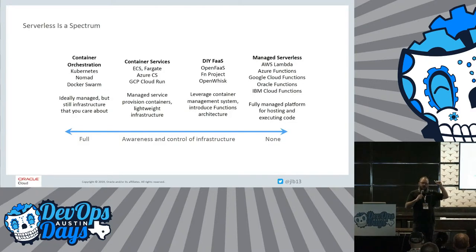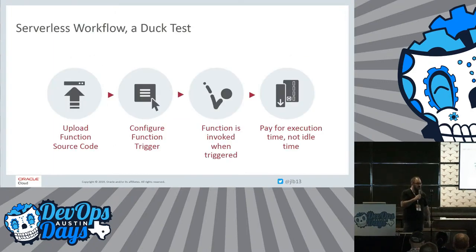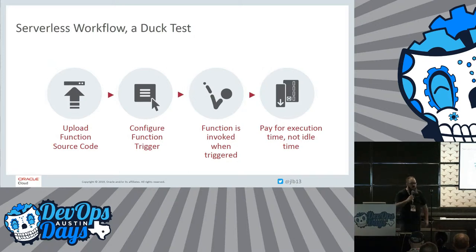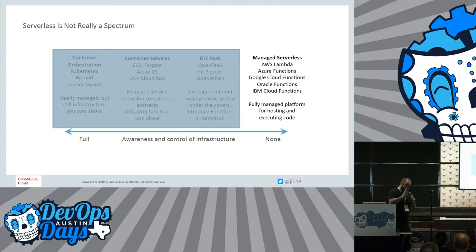We see this slide a lot when we try to explain what serverless is. It's a spectrum — it starts with Kubernetes and containers, goes through Cloud Run into your DIY open-source fast projects, and then finally serverless. Everybody know what a duck test is? If it looks like a duck, walks like a duck, quacks like a duck, it's a duck. This is a serverless duck test: we give a platform some code, we tell it when to run, it runs it, and it only bills us when it runs. So serverless isn't really this big spectrum of stuff, though all the stuff over there that does pass the duck test is built on that stuff.